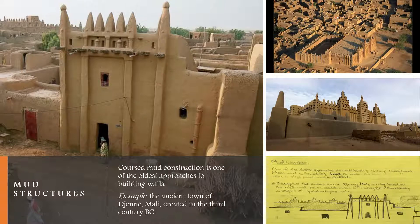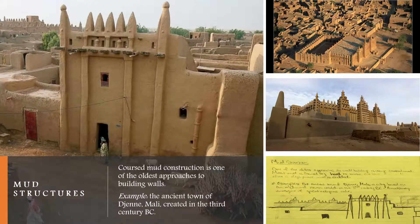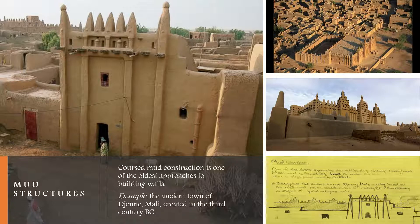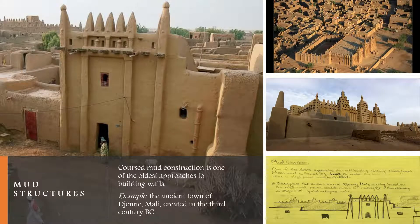The third type of prehistoric structures are mud structures. Coarse mud construction was one of the oldest approaches to building walls. Moist mud was formed by hand and used to build the walls, then left to dry, and other layers would then be added to the walls to add support.